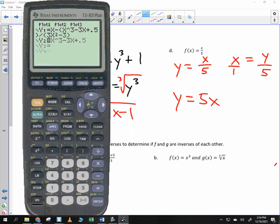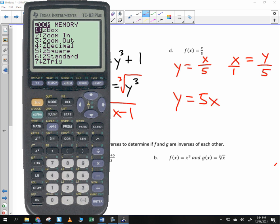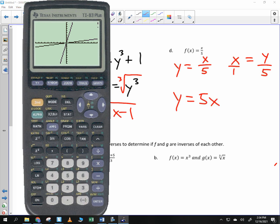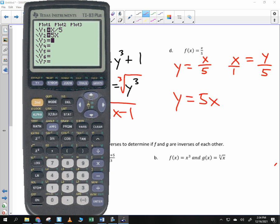I'd like to show you something kind of cool with that. If I were to look at those couple of functions, if I were to look at x/5, and I were to look at 5x and graph them, look at what I get here. So that's my x/5. That's my 5x. If I were to graph another line, just y = x.